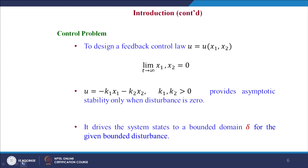The control problem is to design a state feedback control law u = -k₁x₁ - k₂x₂, such that it can drive the system states to the equilibrium point asymptotically. That is, as time varies from 0 to infinity, the system states reach the equilibrium point.